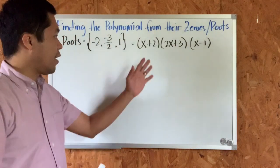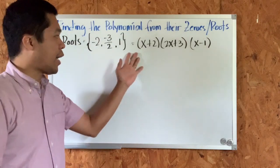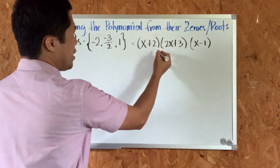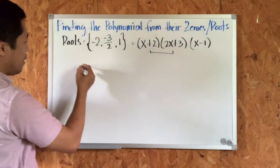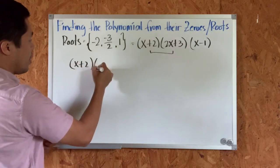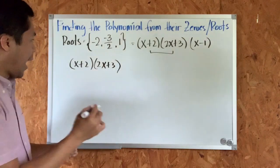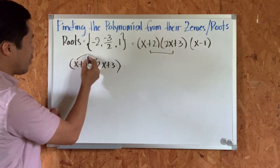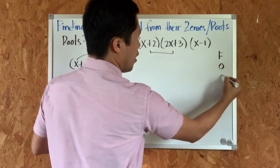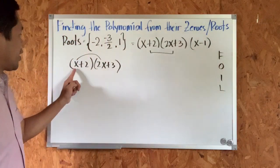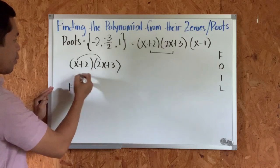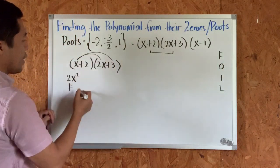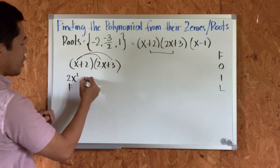Now that we have these three binomials as representations of the three roots, we will multiply them. First we need to multiply any two binomials, so let's multiply the first two using the FOIL method: x plus two times 2x plus three. FOIL stands for first, outer, inner, and last terms. The first terms are x and 2x, giving us 2x squared. The outer terms are x times three, which equals positive 3x.